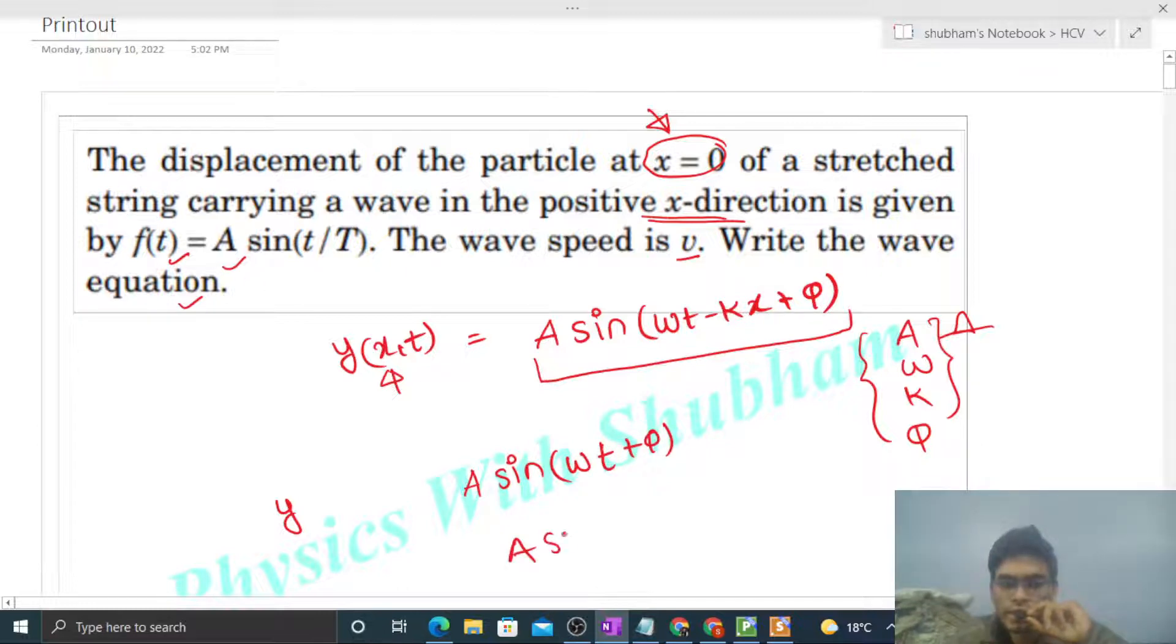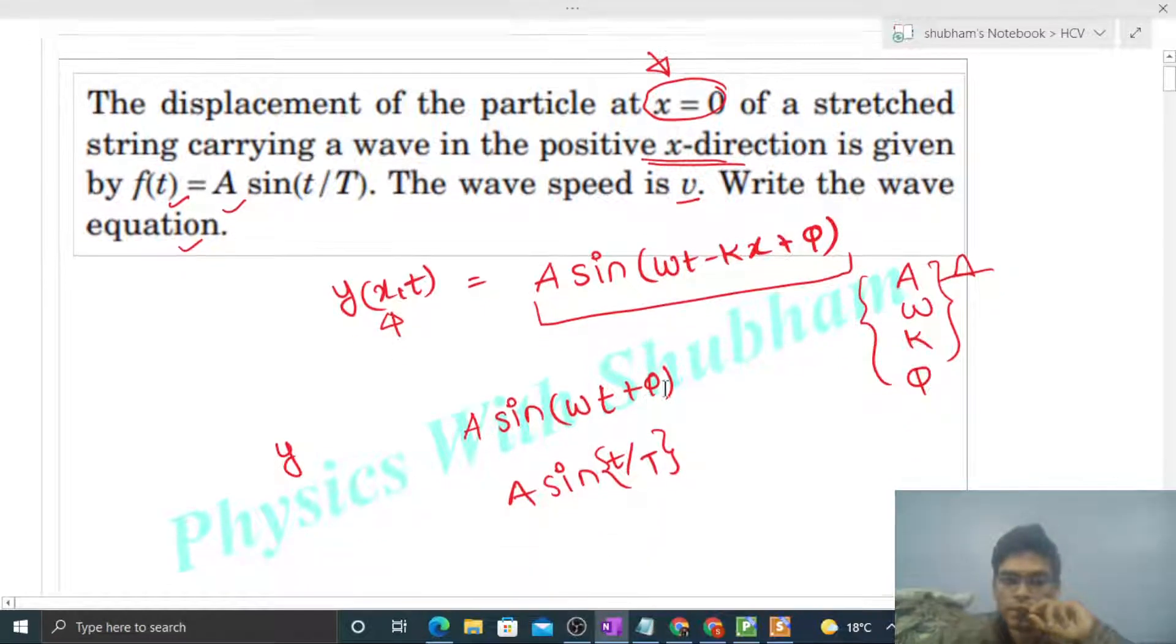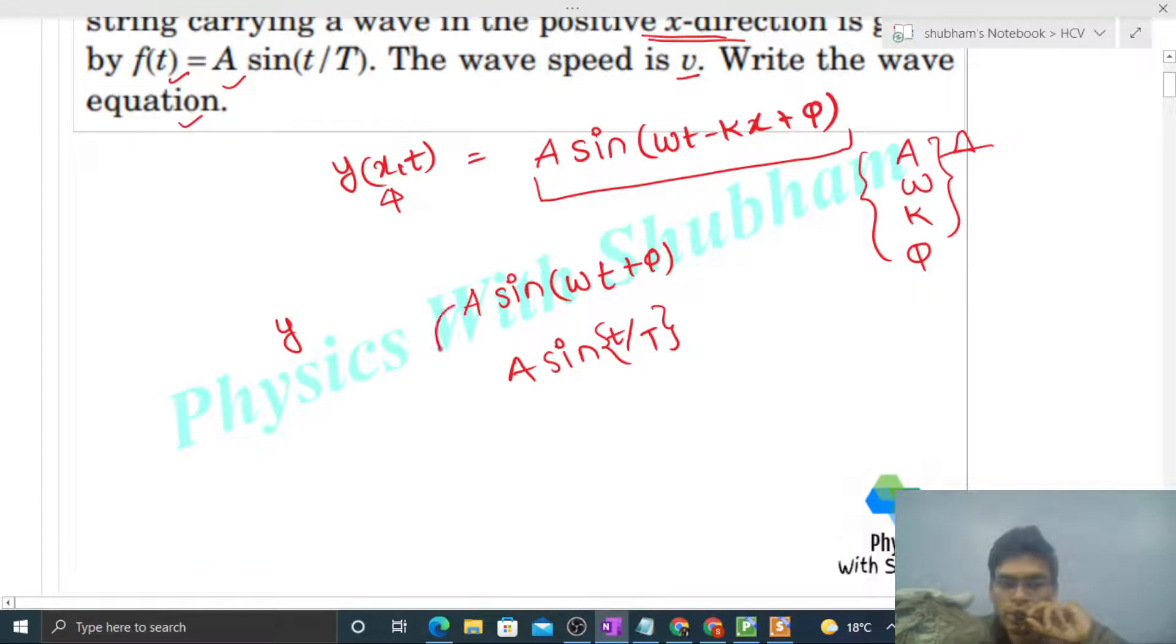The equation given is A sin(t/T). So from here, what can you interpret? The amplitude is A. The angular frequency ω is given as 1 upon T, like the coefficient of time is ω, that is given as 1 by T, and φ is zero.